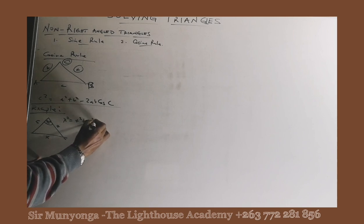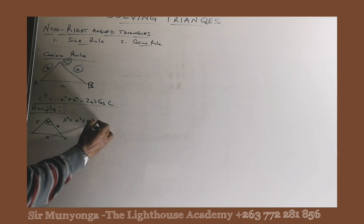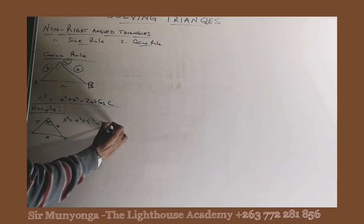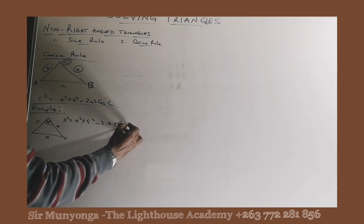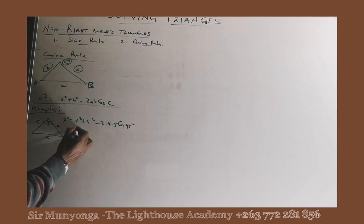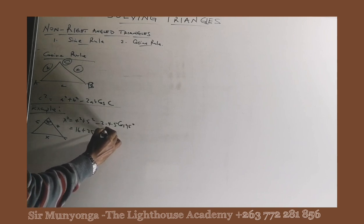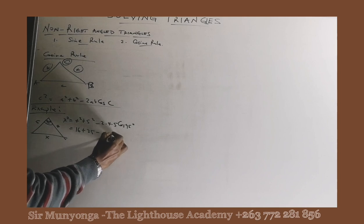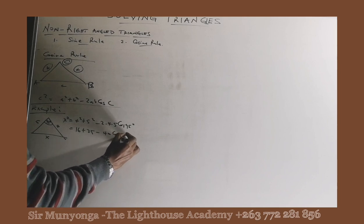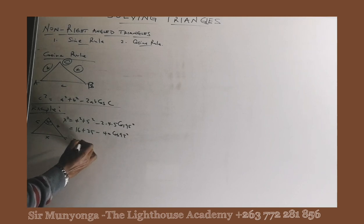Using cosine rule, x squared equals 4 squared plus 5 squared minus 2 times 4 times 5 cos 95 degrees. 16 plus 25 minus 2 times 4, 8 times 5, 40 cos 95 degrees.